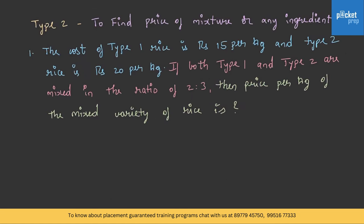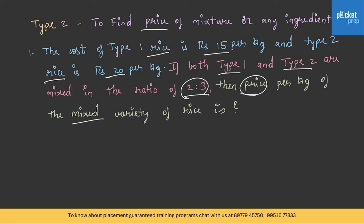Type 2: to find the price of mixture or any ingredient. For example, the cost of type 1 rice is Rs. 15 per kg and type 2 rice is Rs. 20 per kg. If both type 1 and type 2 are mixed in the ratio 2:3, then what is the price per kg of the mixed variety of rice? In this case, the prices of two ingredients and the proportion are given, and we need to find the price of the mixture. We can solve this using the rule of allegation.